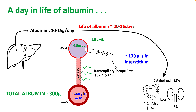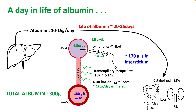The reason albumin is present in the interstitium is because it is transported across the capillary membrane. The transcapillary escape rate is about 5% per hour, giving albumin a distribution half-life of around 15 hours. In 24 hours, around 120 grams is filtered and a similar amount is returned via lymphatics back to the intravascular compartment, maintaining homeostasis.